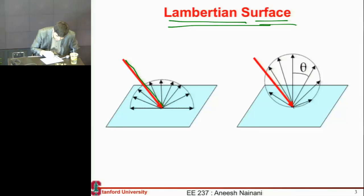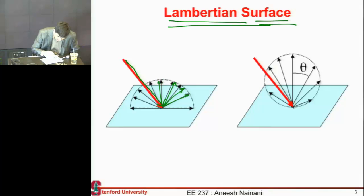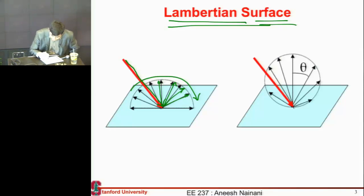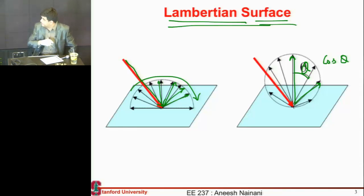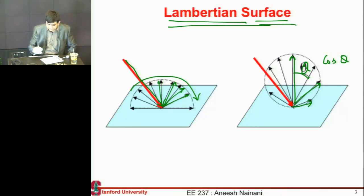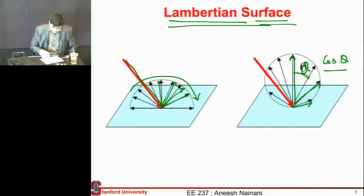What does a Lambertian surface mean? Usually when light comes in, it reflects off a surface and the intensity has some dependence on the angle at which it reflects. For a Lambertian surface, if it reflects at an angle theta from the surface, the intensity of the light is proportional to cos theta. When reflecting at 0 degrees from the normal it has maximum intensity, and as the angle increases the intensity decreases, reaching essentially zero at 90 degrees — following this cos theta dependence.